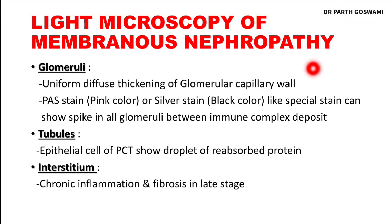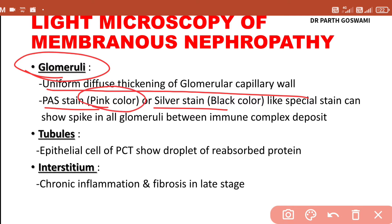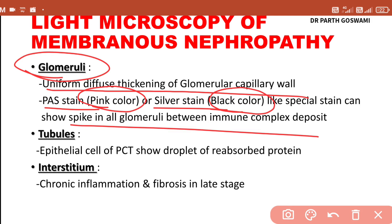On light microscopy, the biopsy shows uniform diffuse thickening of the glomerular basement membrane — immunoglobulin and complement are deposited in the membrane of the glomerulus. For demonstration of glomerular thickening, special stains can be performed: in periodic acid-Schiff (PAS) stain the membrane looks pink, while in silver stain there is black-colored membrane thickening. These special stains can also demonstrate spikes in the glomerulus between the immune complex depositions.